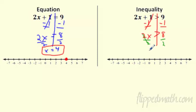2 times, I'm going to divide by 2. Divide by the 2 and you get x is greater than 4. So what's the difference here? All the steps are the same. But my answer instead of equal sign, like x equals 4, is now x is greater than 4.